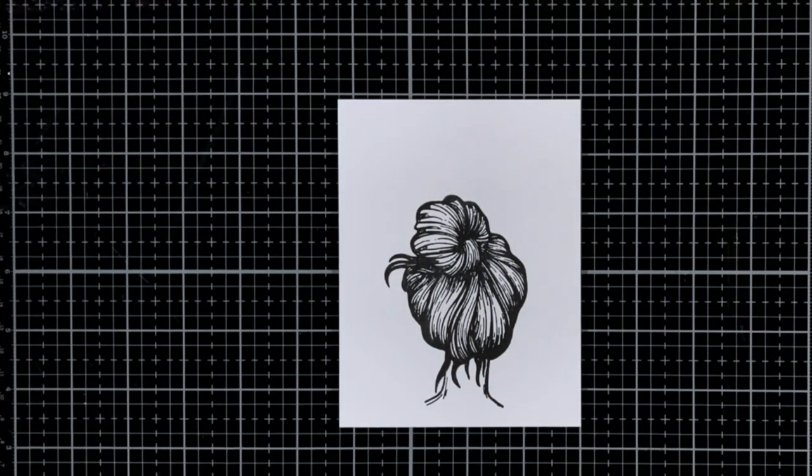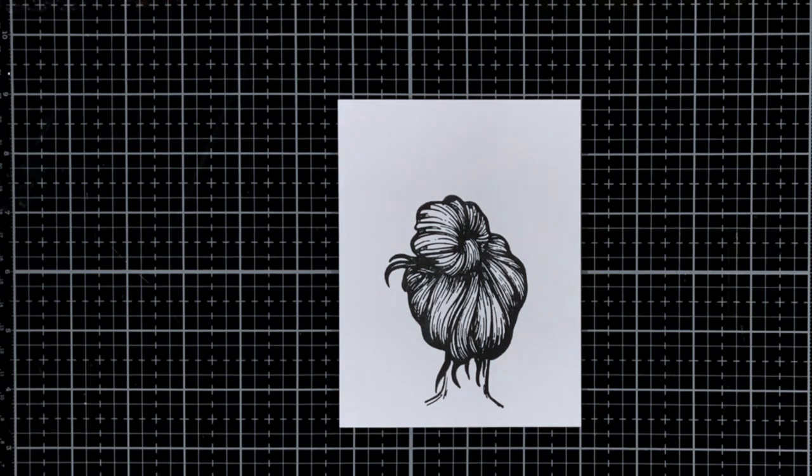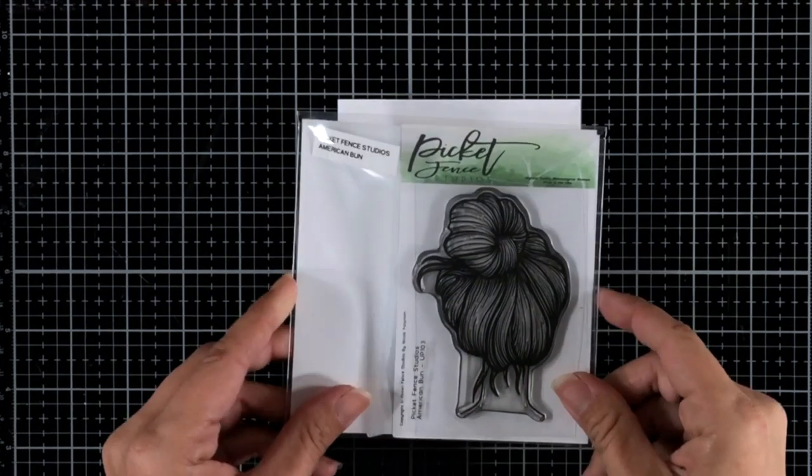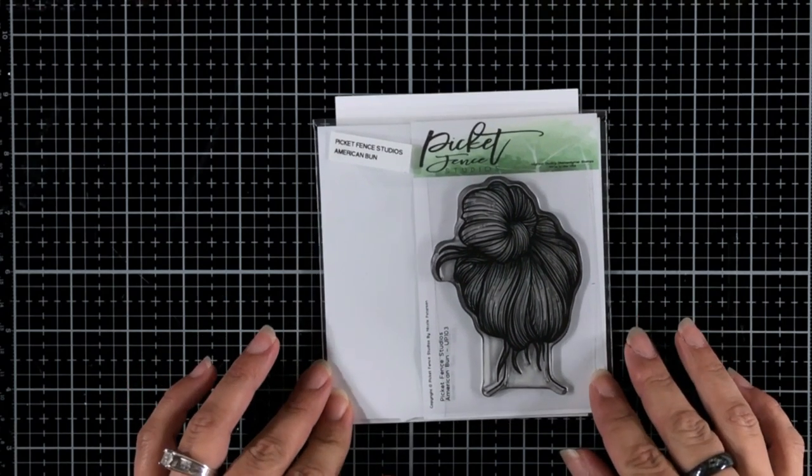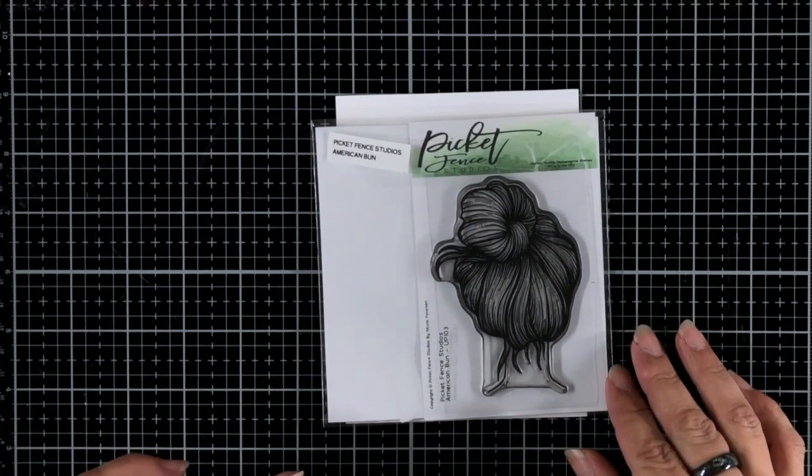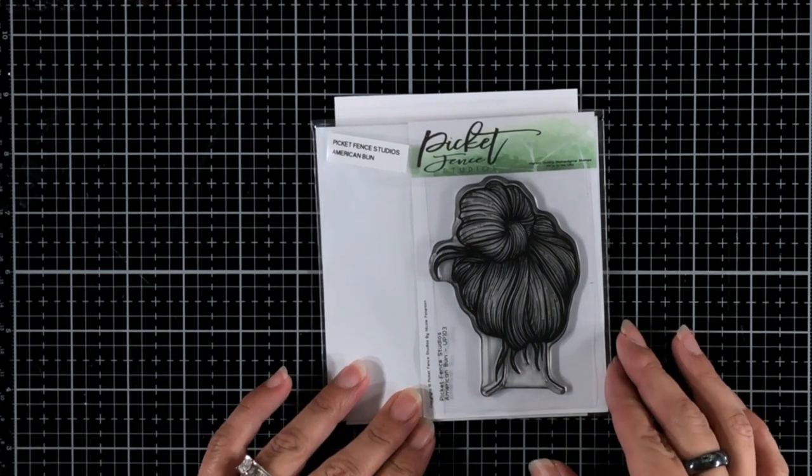To start off we're going to be doing a little Copic coloring. I already stamped my image onto some Neenah Solar White cardstock, 80 pound. This is the American Bun stamp set from Picket Fence Studios. You can see it is just the back of the head and I had so many ideas for this once I got started.